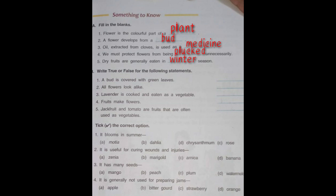Now we will move towards the true or false. Number one: A bud is covered with green leaves. Yes, absolutely. Bud ke upar green leaves ki covering hoti hai, and those green leaves help the bud to bloom into a flower and protect the bud from the weather and climate. So, it is true.